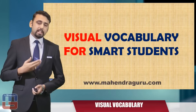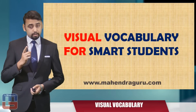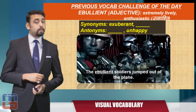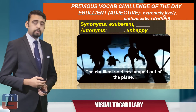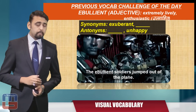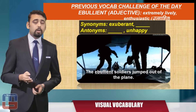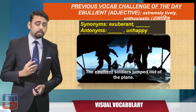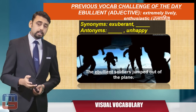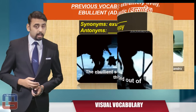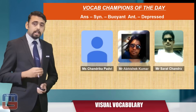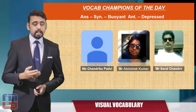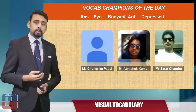Welcome to our today's session of Visual Vocabulary for Smart Students. Let's look at the previous vocab challenge. The word was 'ebullient' — being an adjective, it meant extremely lively or enthusiastic; in Hindi it's 'Utsahit.' We asked you for the missing synonym and antonym. The correct synonym was 'buoyant' and the correct antonym is 'depressed.'